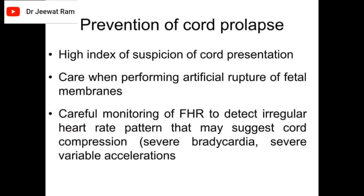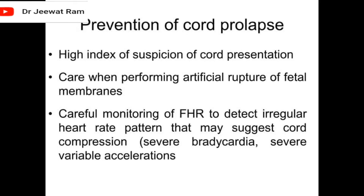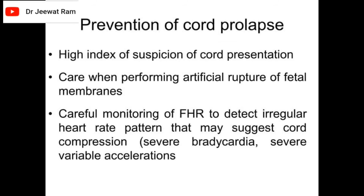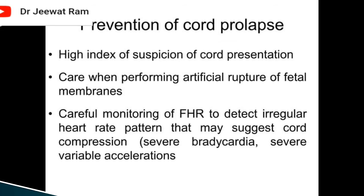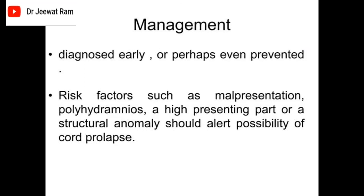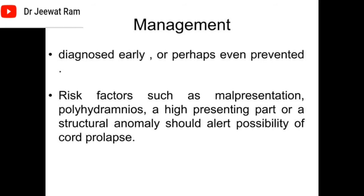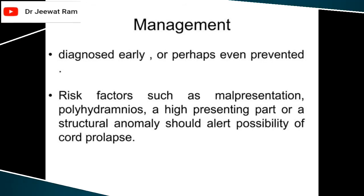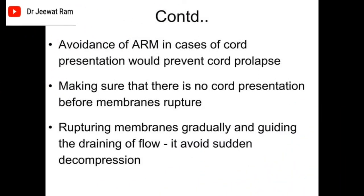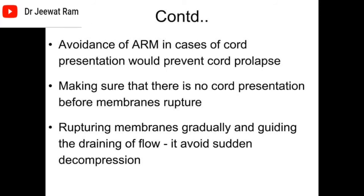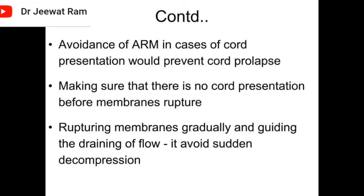Prevention of cord prolapse includes: a high index of suspicion of cord presentation, care when performing artificial rupture of fetal membranes, and careful monitoring of fetal heart rate to detect irregular patterns suggesting cord compression, such as severe bradycardia or severe variable decelerations. Risk factors such as malpresentation, polyhydramnios, a high presenting part, or a structural anomaly should alert the clinician to the possibility of cord prolapse. Avoidance of ARM in cases of cord presentation would prevent cord prolapse. Ensure there is no cord presentation before membranes rupture, and rupture membranes gradually to avoid sudden decompression.